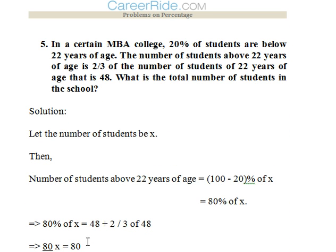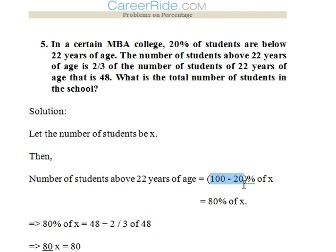5th question: In a certain MBA college, 20% of students are below 22 years of age. The number of students above 22 years of age is 2/3 of the number of students of exactly 22 years of age, which is 48. The question is framed in a tricky way, so we deduce: 20% of students are below 22 years of age, which means 80% of students are 22 years of age or above, i.e., 80% of x.